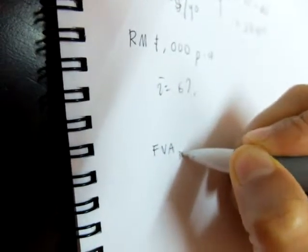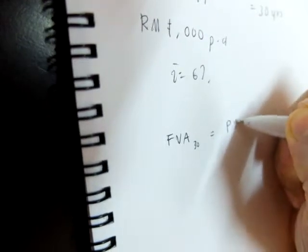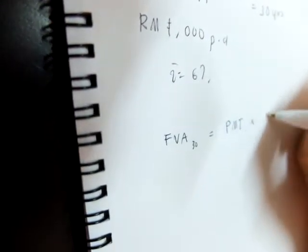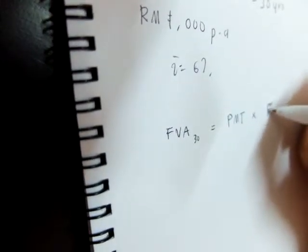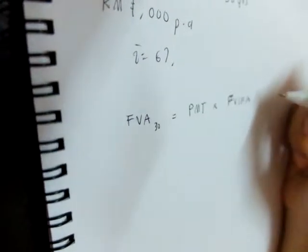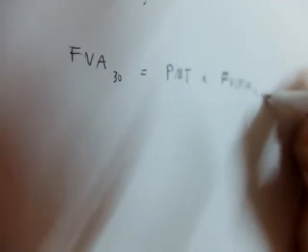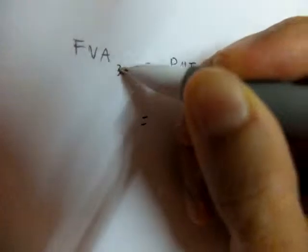Annuity here is 30 years. You get your payment and then you multiply by your interest factor of an annuity of i,N. Your i,N is...